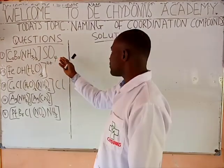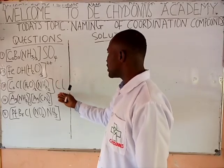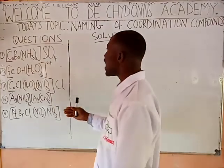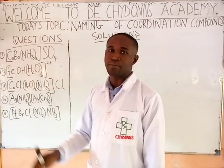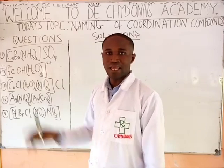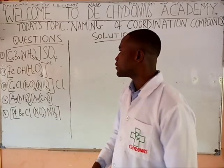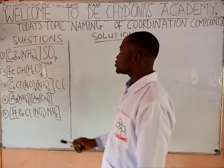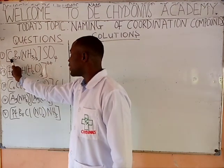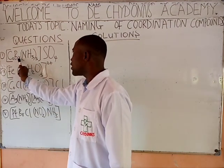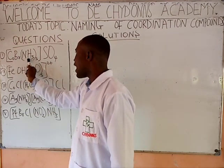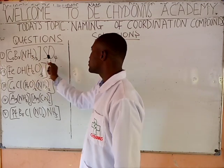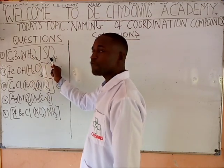Let's look at examples of those coordination compounds and see how we can name them. In the first one, we have cobalt, bromine, ammonium, and sulfate.